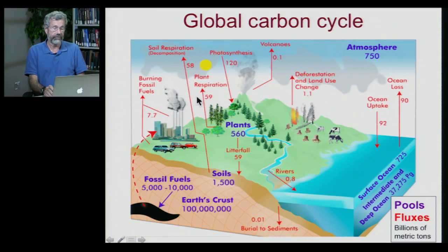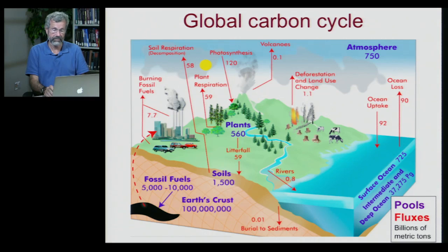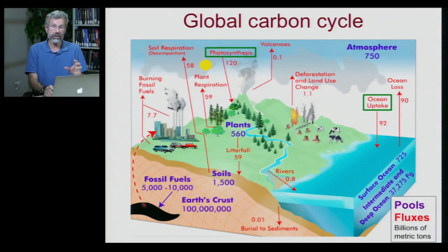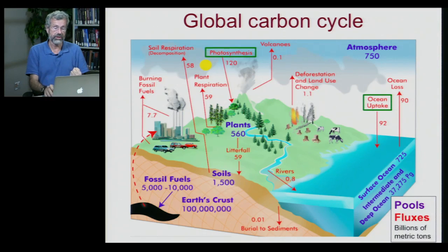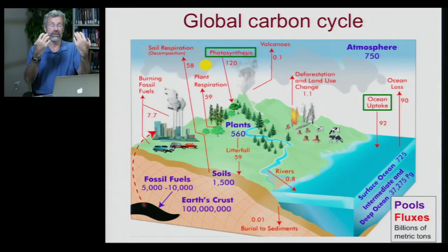So there's always been a back and forth. Volcanoes are another source out of the Earth — volcanic gases can also emit carbon dioxide. Photosynthesis and ocean uptake are two natural systems that take CO2 out of the air, and there's always been a rough balance between the amount of carbon dioxide taken out of the air and returned.